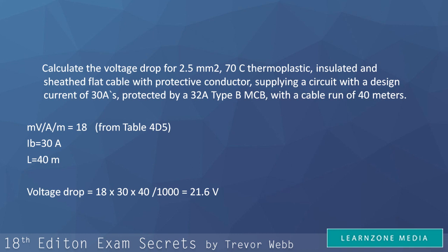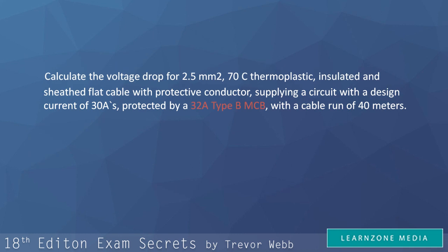I would just like to point out a few more things before we finish because they might be helpful for you in the exam. Remember the question that we used as an example mentioned a 32 amp type B MCB as a protective device for the circuit? The only reason why this piece of information was there is to confuse you and take you down a wrong path.